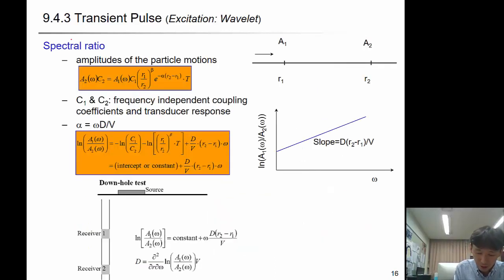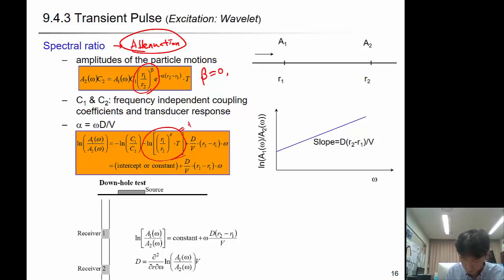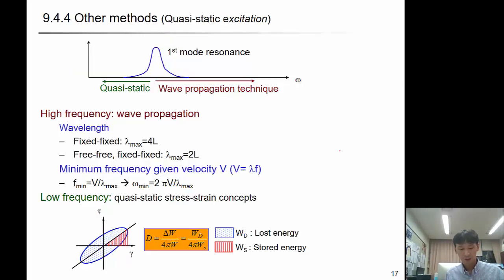The other method is to get the attenuation. Here we are looking at amplitude decrease, amplitude degradation over distance. When we assume there's no geometric damping, so when geometric damping beta is zero, then we'll have amplitude reduction over frequency, and slope will give you the damping ratio.